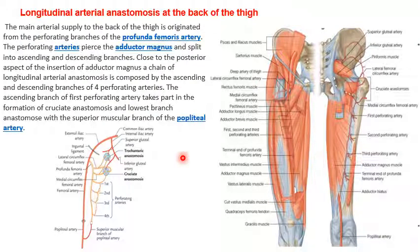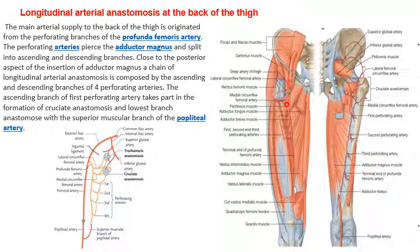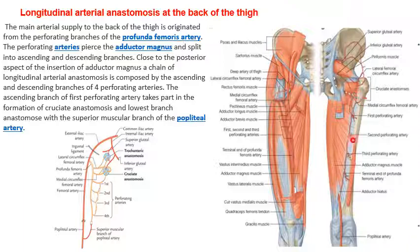The longitudinal arterial anastomosis is at the back of the thigh. The femoral artery gives rise to the profunda femoris artery, which gives four perforating arteries. These pierce the adductor magnus and go over the back, dividing into ascending and descending branches which anastomose with each other. This forms the longitudinal arterial anastomosis.